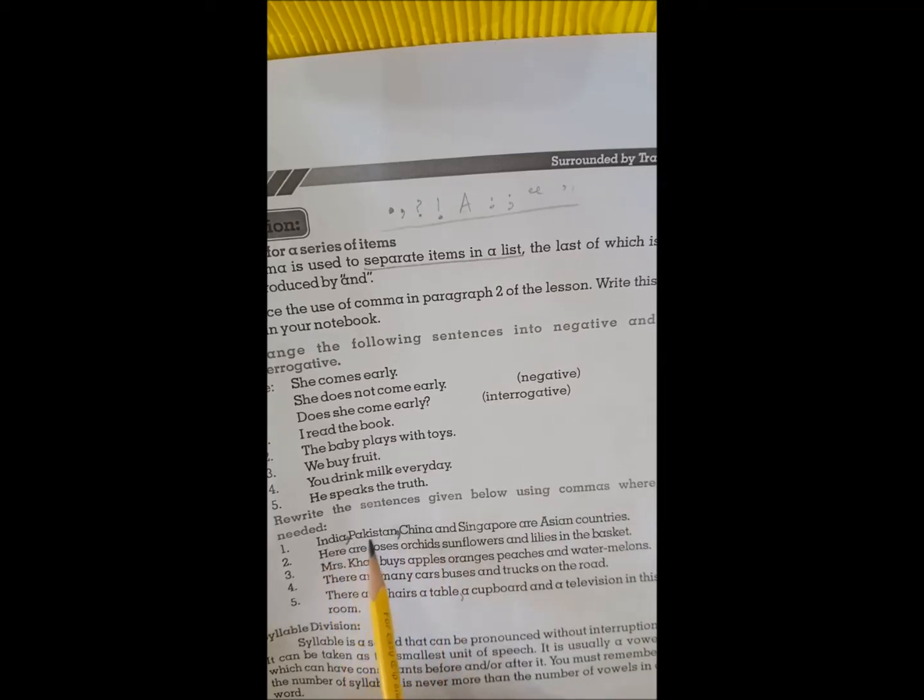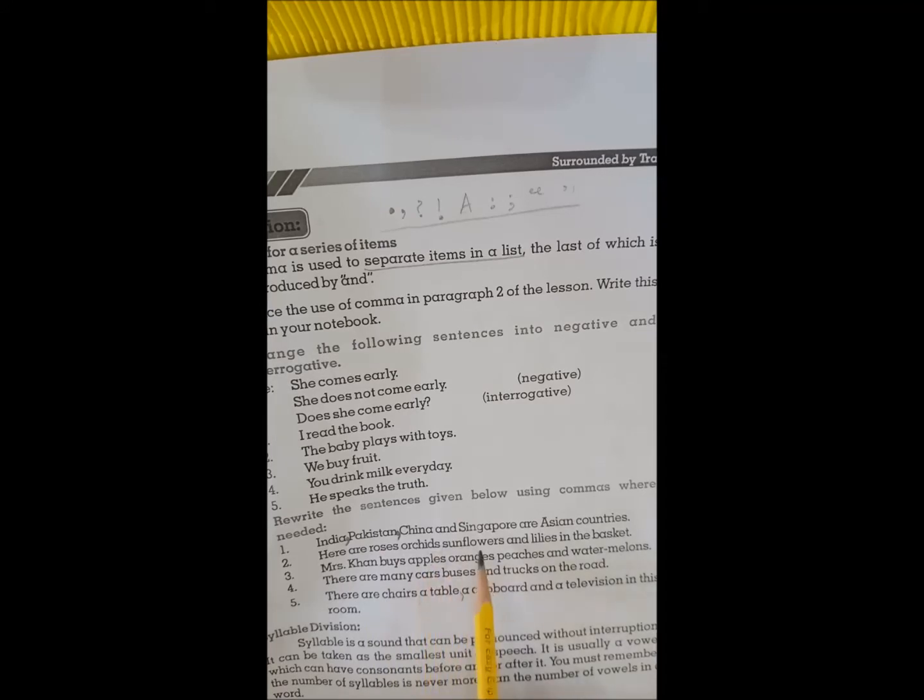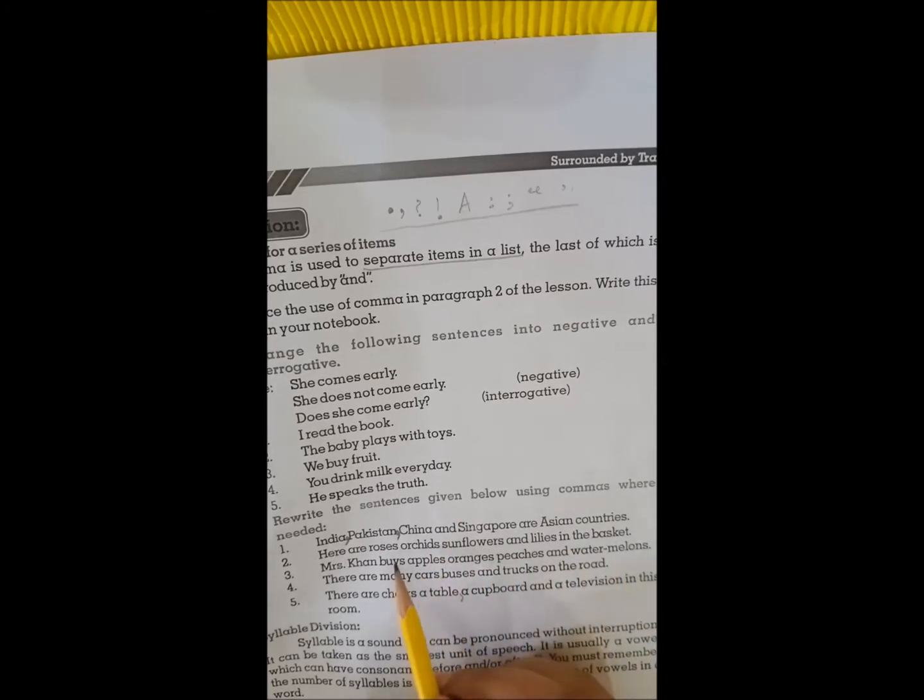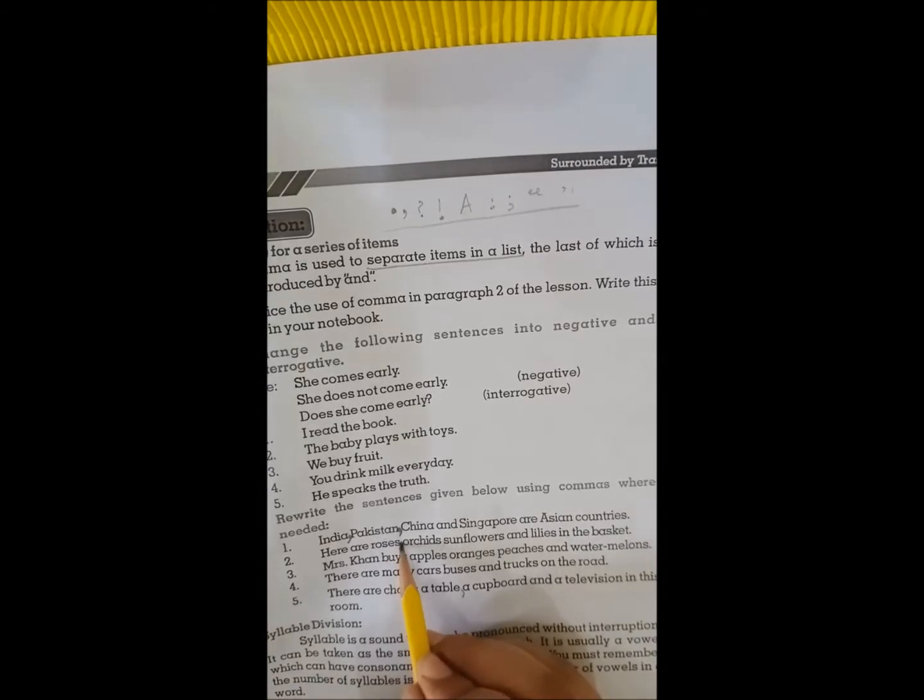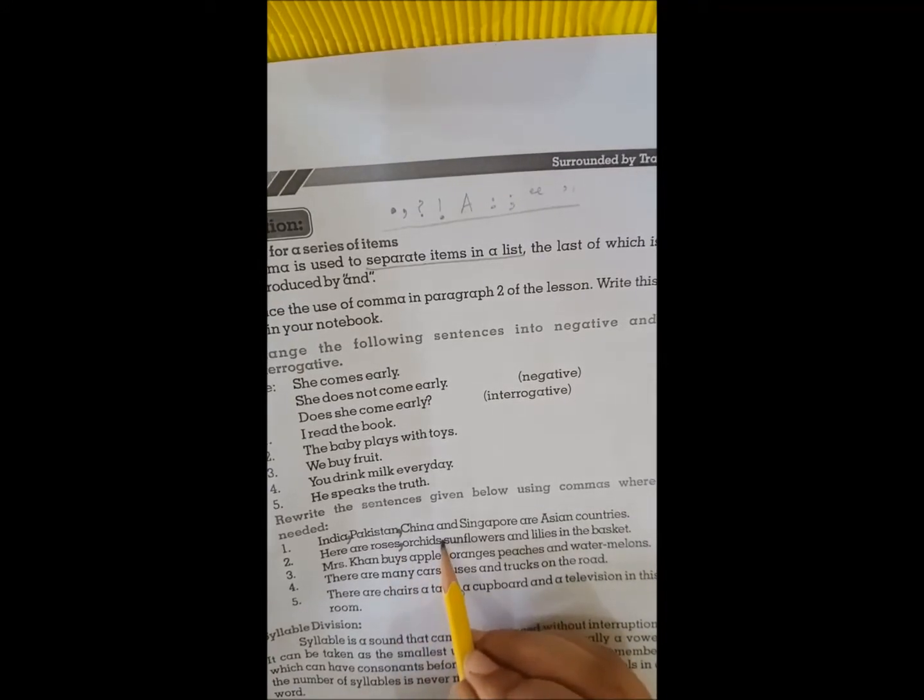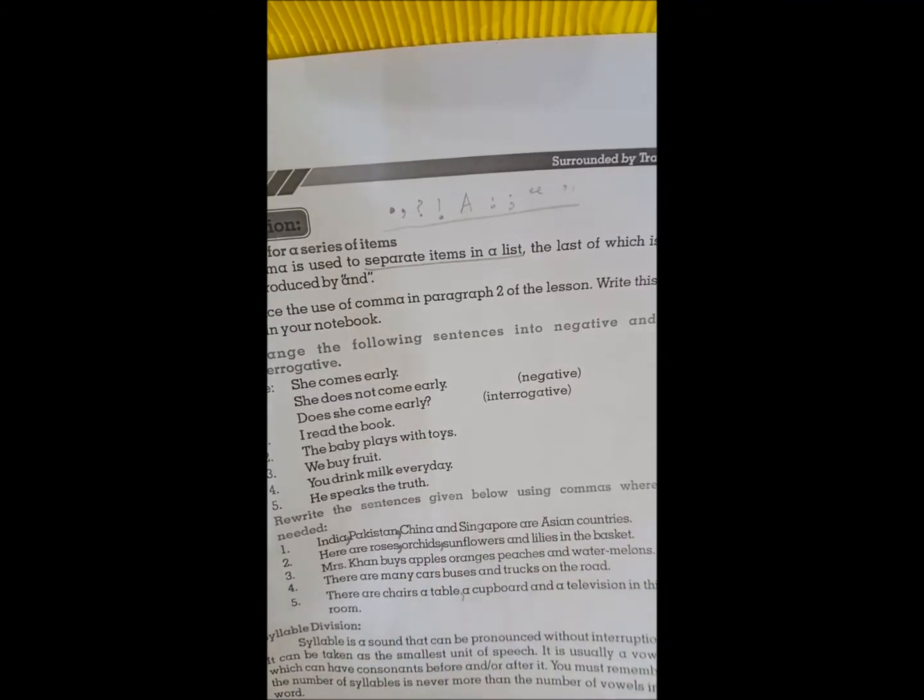Here are roses, orchids, sunflowers and dillies in the basket. So here are the names of the flowers. We will put comma: roses, orchids, sunflowers and dillies in the basket.